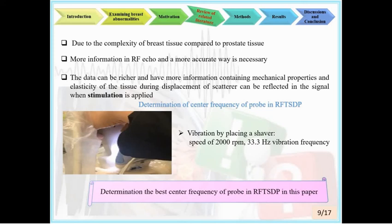Different parameters of RF time series on classification accuracy were evaluated in studies mentioned in the literature review. Results reported that the center frequency of the probe fails to have a significant effect on classification accuracy, while increased ROI depth can decrease accuracy due to beam divergence after the focus point. Therefore, center frequency of the probe in RFTSDP was considered in this paper.